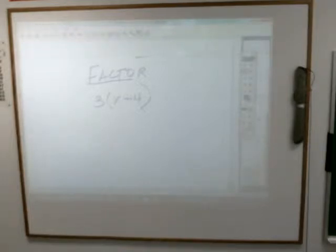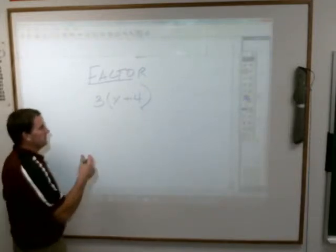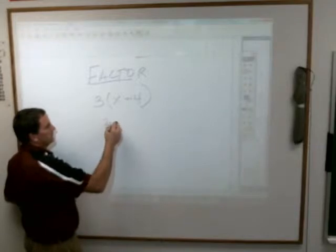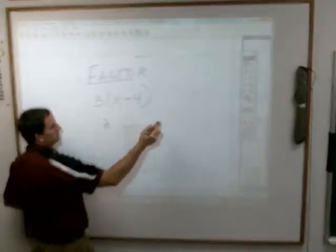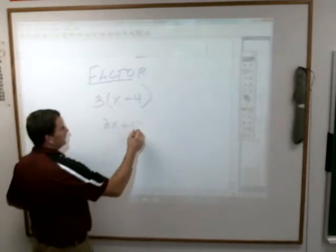What do I get if I take 3 times x plus 4 in parentheses? Jacob says 3x plus 12. Okay, 3x plus 12. Everybody's good at that?